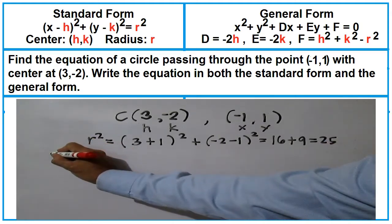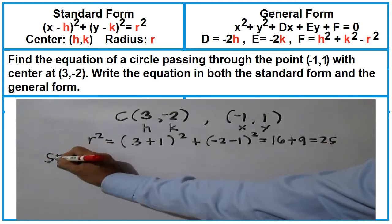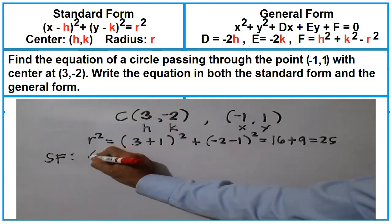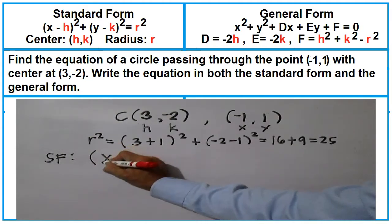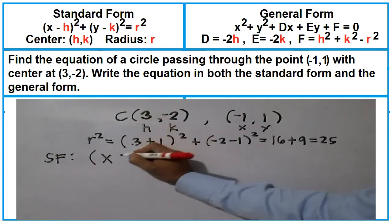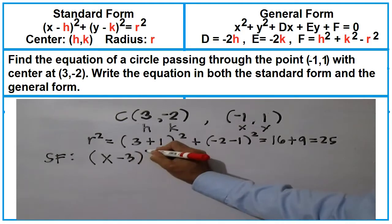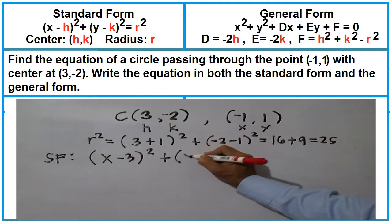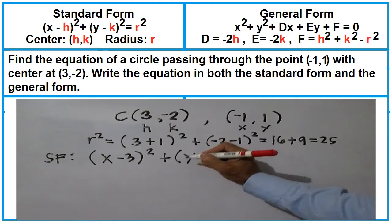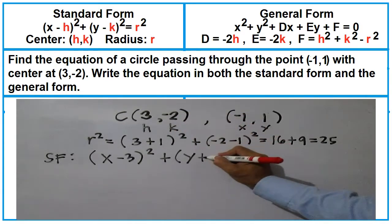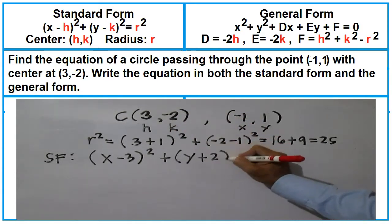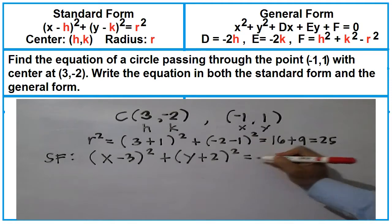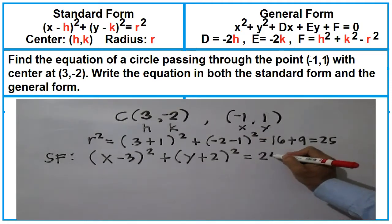The standard form is (x minus 3) squared plus (y minus negative 2), or (y plus 2) squared, equals r squared which is 25.